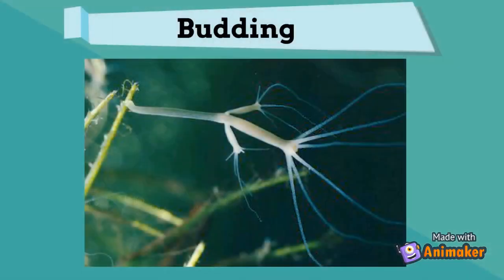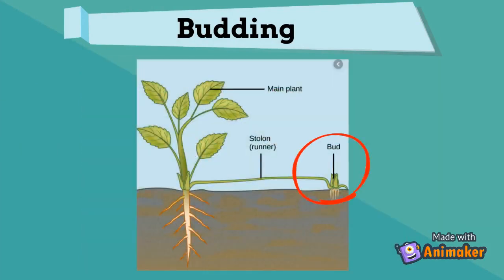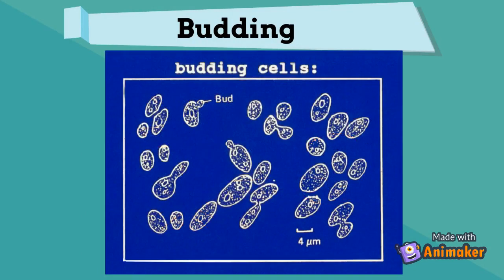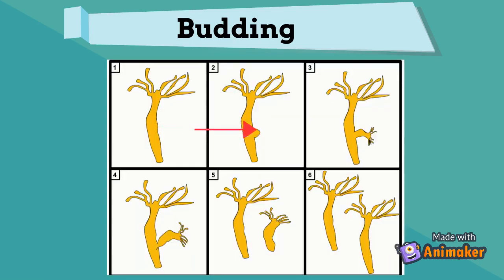Budding: in some species, buds may be produced from almost any point of the body, but in many cases the budding is only found in a specialized area. The bud eventually develops into an organism duplicating the parent. Budding is characteristic of a few unicellular organisms like bacteria, yeast, and protozoa. However, a few animals like the hydra also reproduce by budding.